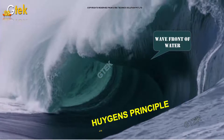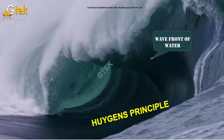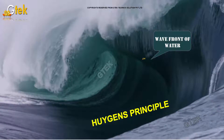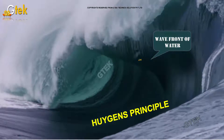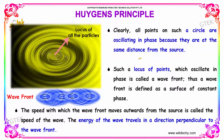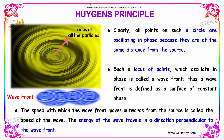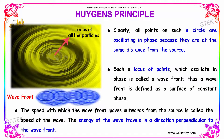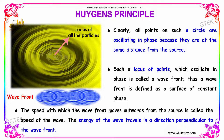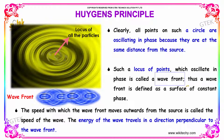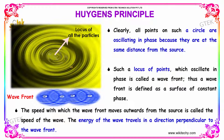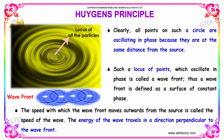You can see here the waves, and this region is indicating the wavefront of water. All points on such a circle are oscillating in phase because they are at the same distance from the source. Such a locus of points which oscillate in phase are called a wavefront — the locus of all the particles.